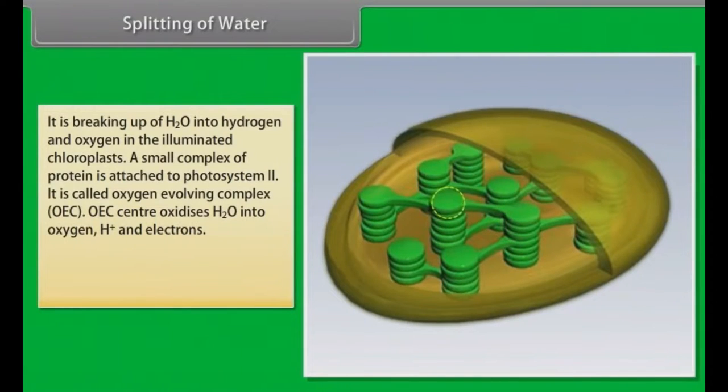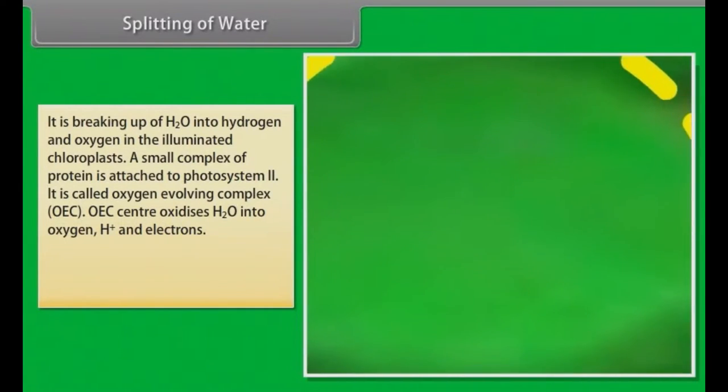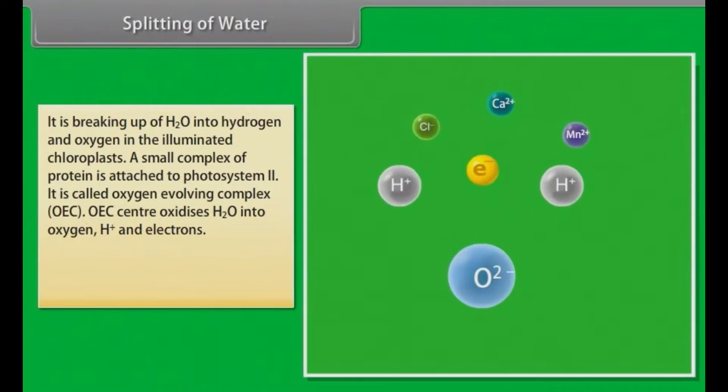Splitting of water: It is breaking up of H2O into hydrogen and oxygen in the illuminated chloroplast. A small complex of protein is attached to photosystem II. It is called oxygen evolving complex, OEC. The center oxidizes H2O into oxygen, H+, and electrons. Cl-, Ca2+, and Mn2+ are required during this process.